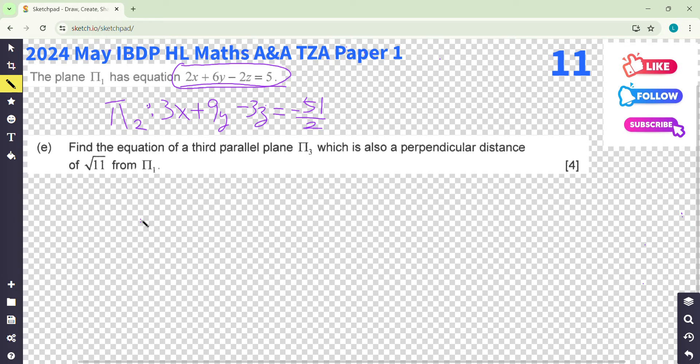It said that find the equation of a third plane, π_V, which is also a perpendicular distance of square root 11 from π_1. So what does it mean?